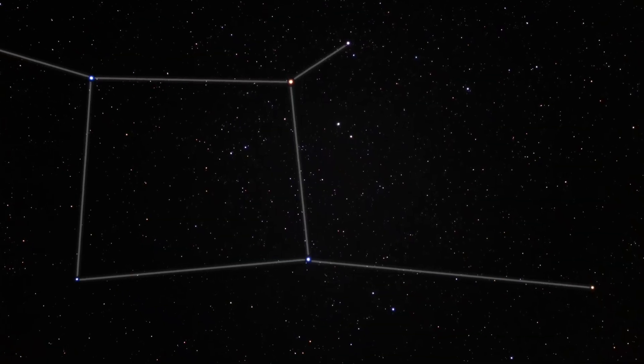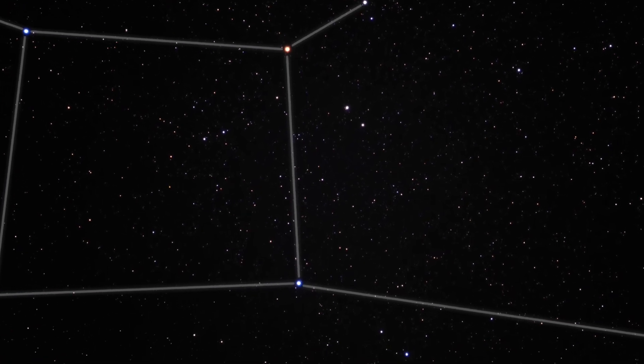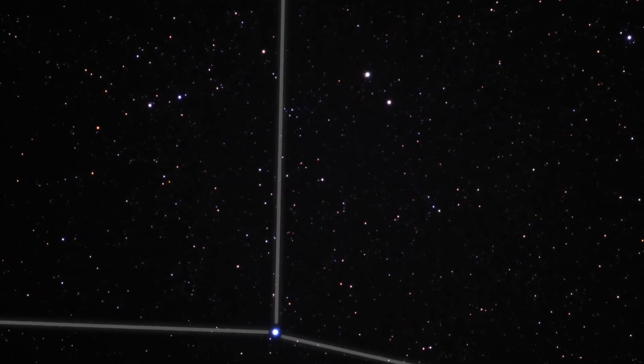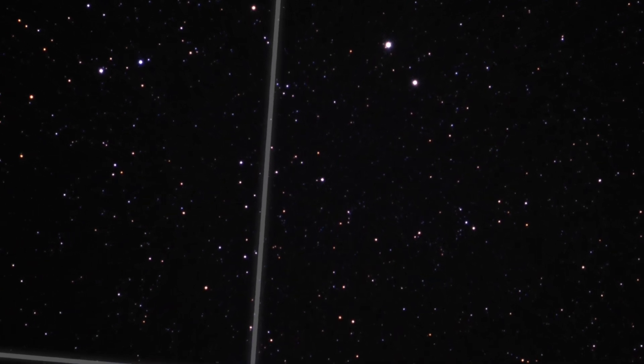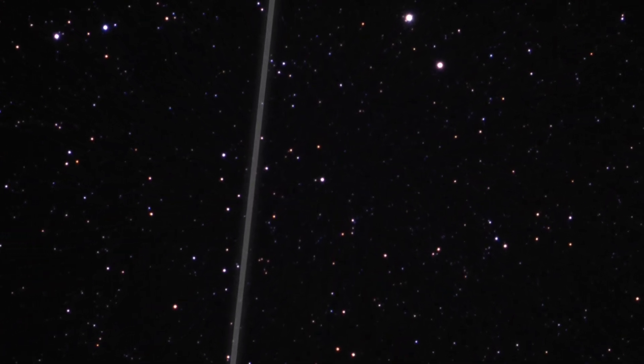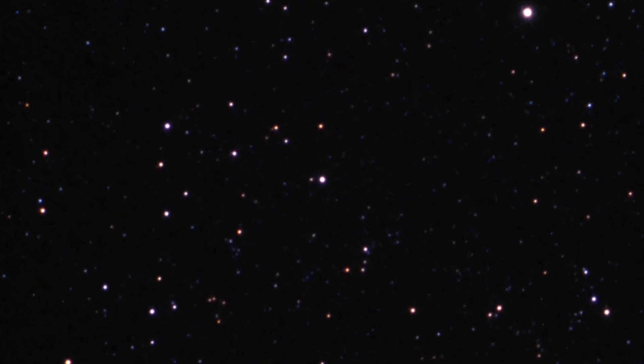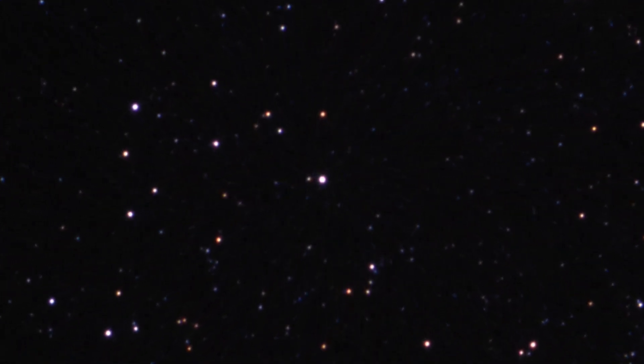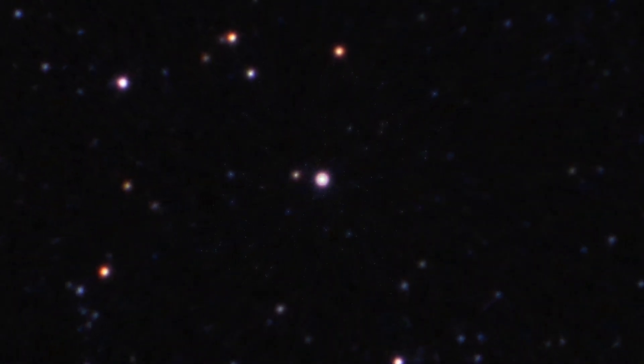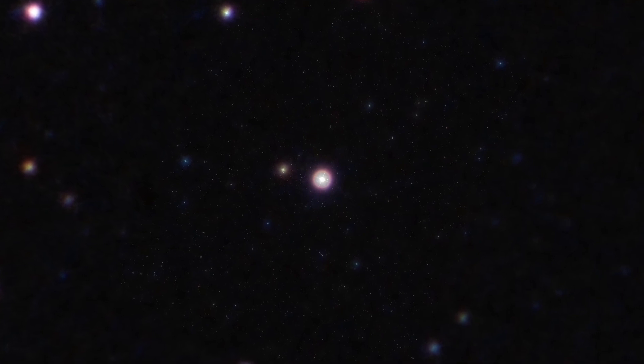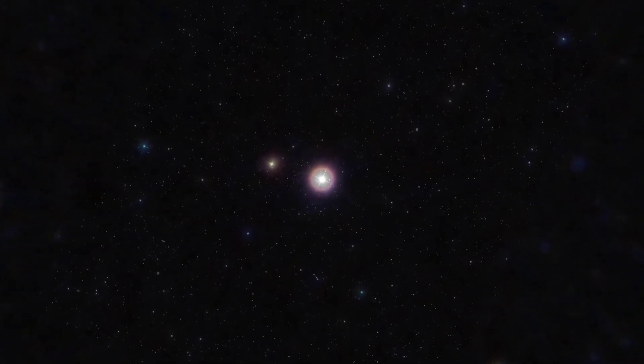But even more strange than this solar system is the solar system associated with Przybylski's star. And this is located fairly close, only about 350 light-years away from our planet. And although the star itself is not terribly unusual, its composition most definitely is. It contains very unusual elements like strontium and cesium, thorium, uranium. But also, surprisingly, there are also elements such as neptunium, plutonium, and einsteinium. Einsteinium, by the way, has a half-life of only 472 days. It simply should not be in this star at all. And yet, there it is.